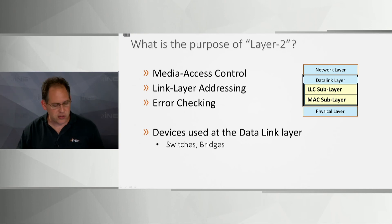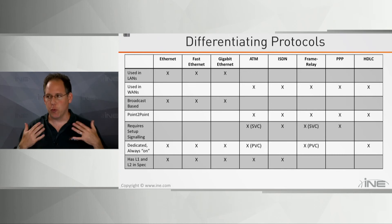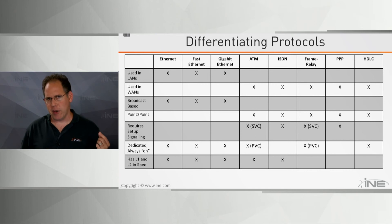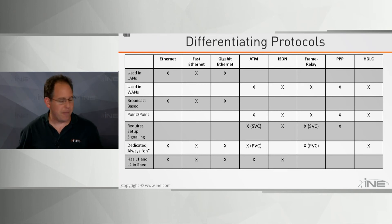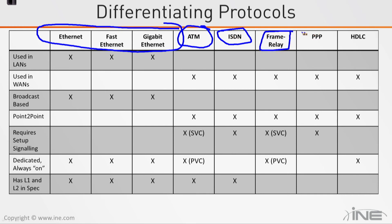Now let's differentiate between the various layer 2 protocols. The actual true layer 2 protocols — even though the blueprint mentions serial, optical, and DSL, those are not layer 2 protocols so they're not included here. The true layer 2 protocols are the various flavors of Ethernet, Asynchronous Transfer Mode (ATM), Integrated Services Digital Network (ISDN), Frame Relay, Point-to-Point Protocol (PPP), and High-Level Data Link Control (HDLC).